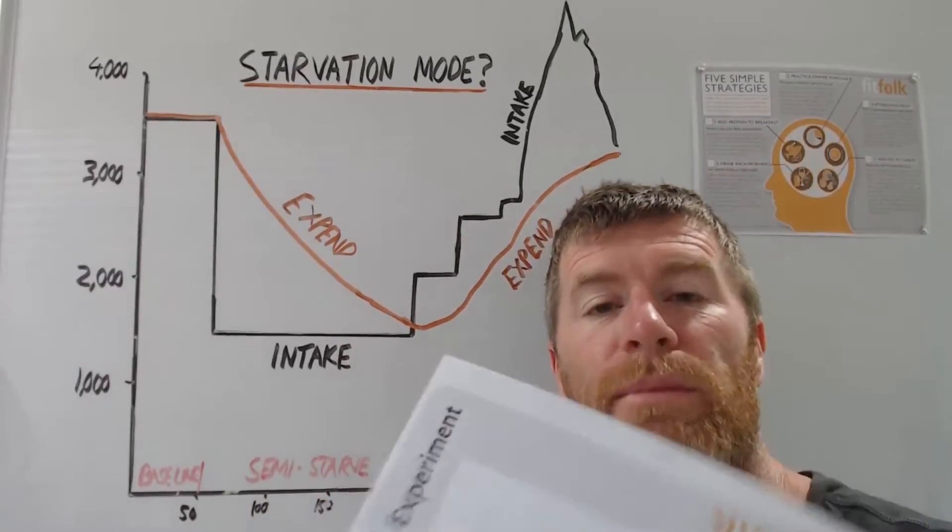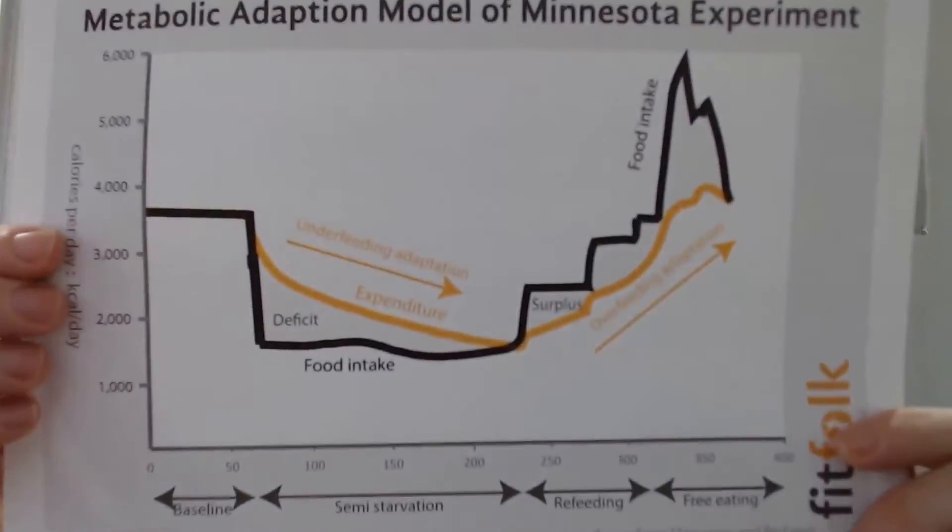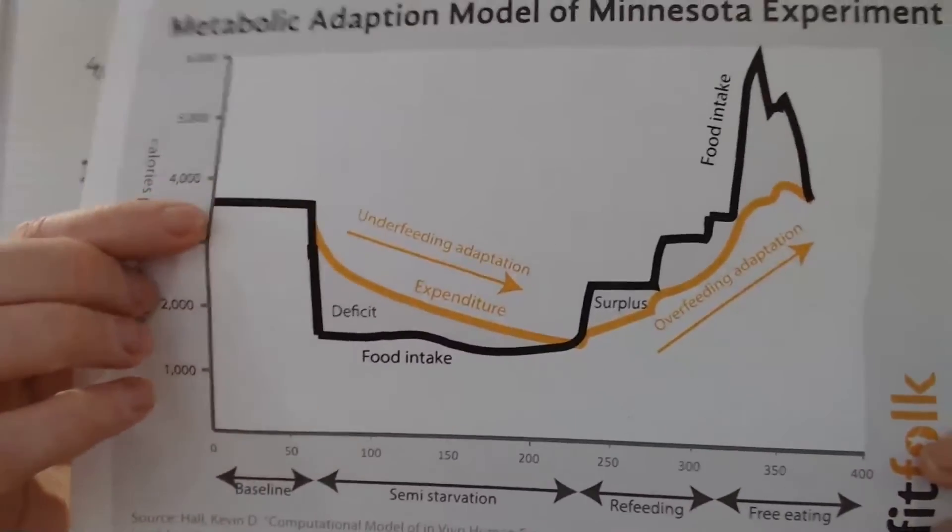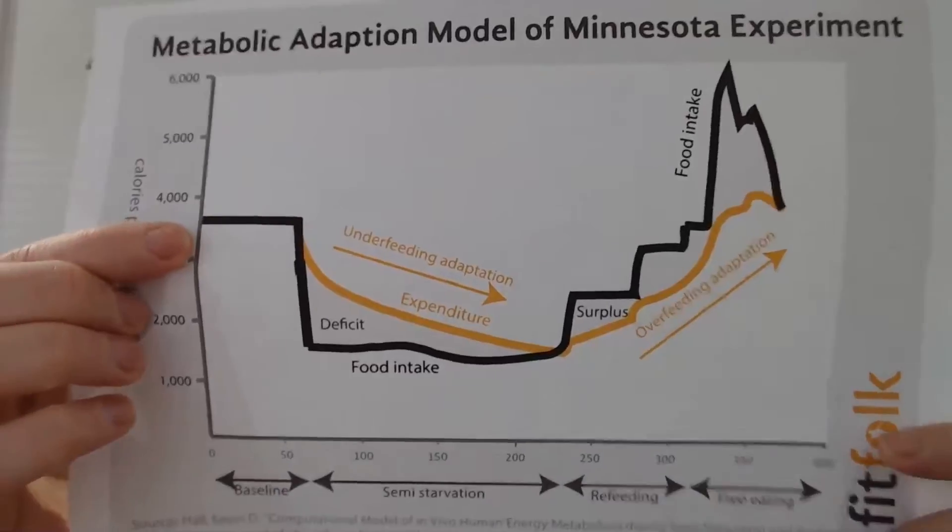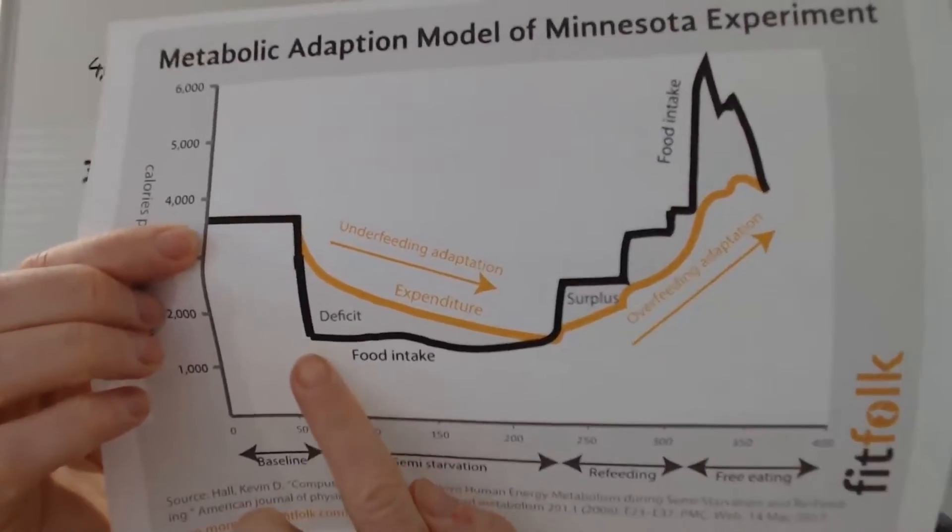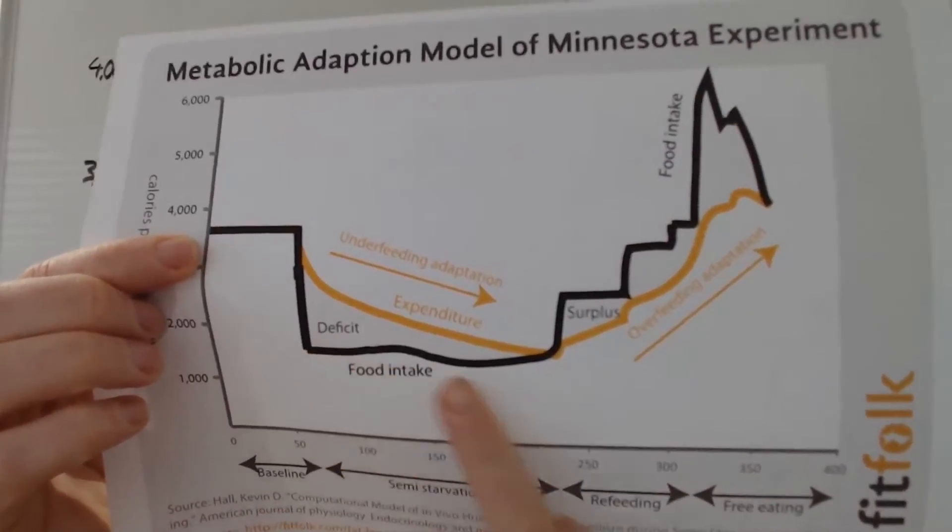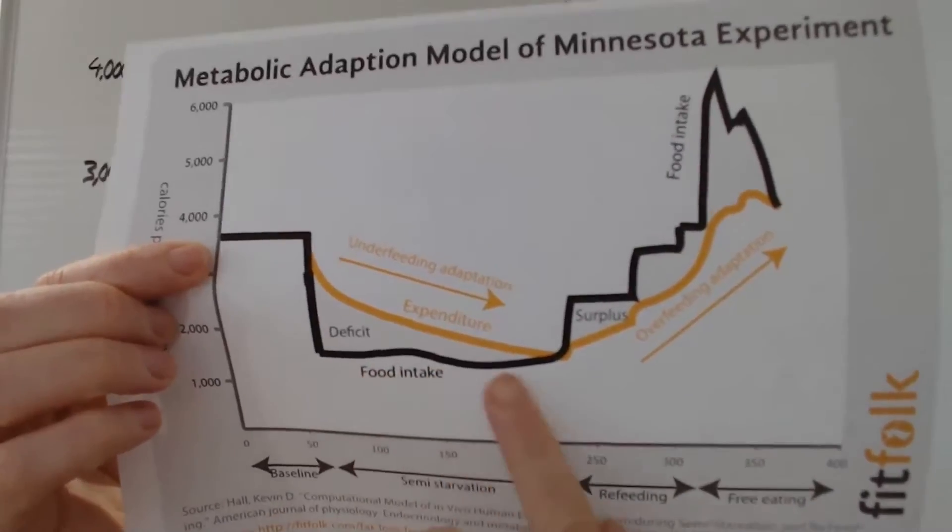So basically what they did was they took a bunch of guys in the wartime era. And this is their really high energy expenditure that needed 3,500 calories. And they crashed their food intake down to like 1,500 for a client of six months and semi-starved them.